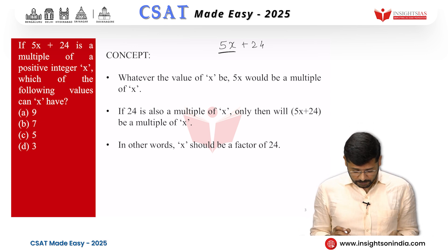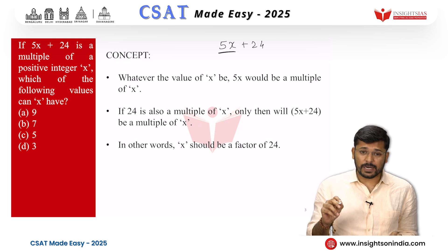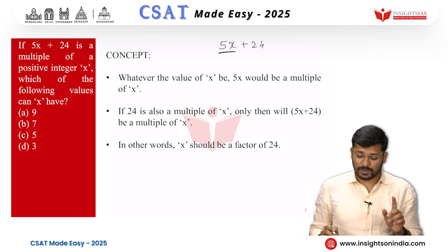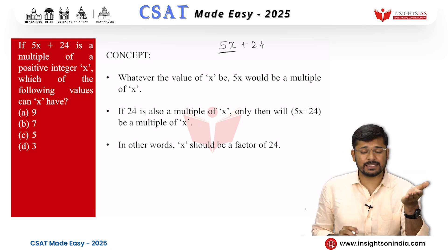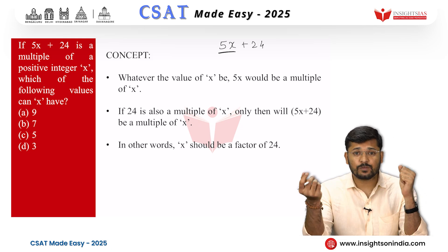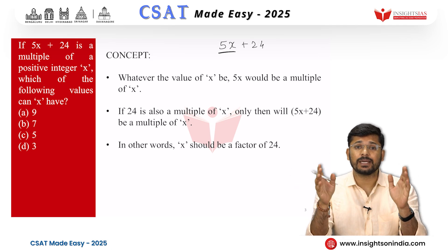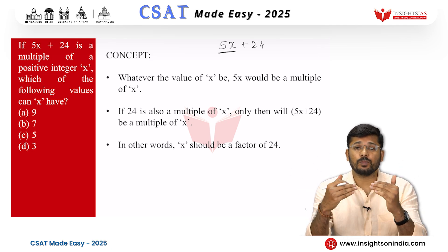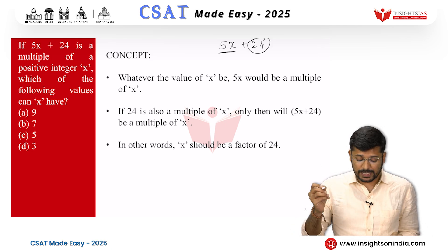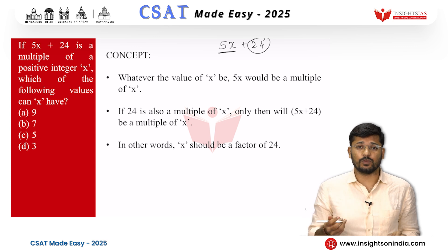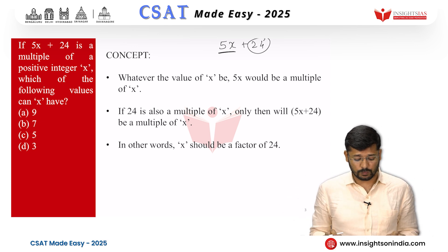Look at the second point. If 24 is also a multiple of x only then will 5x plus 24 be a multiple of x. If 24 is also a multiple of x only then we can expect 5x plus 24, the sum of them, to be a multiple of x. So 24 has to be a multiple of x. In other words, x is a factor of 24.